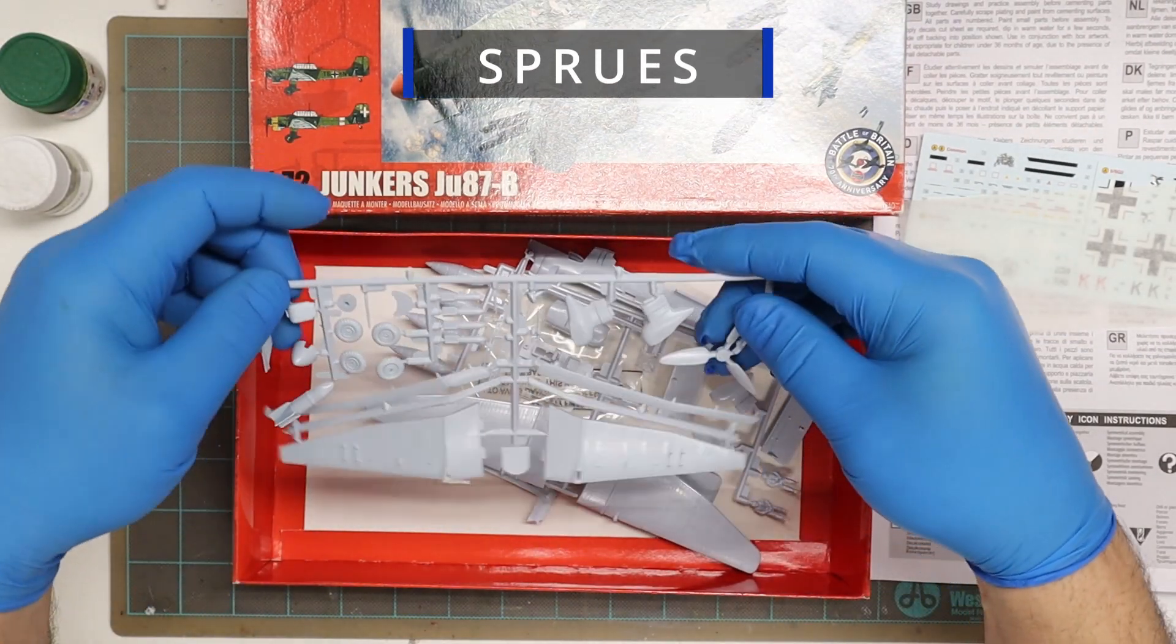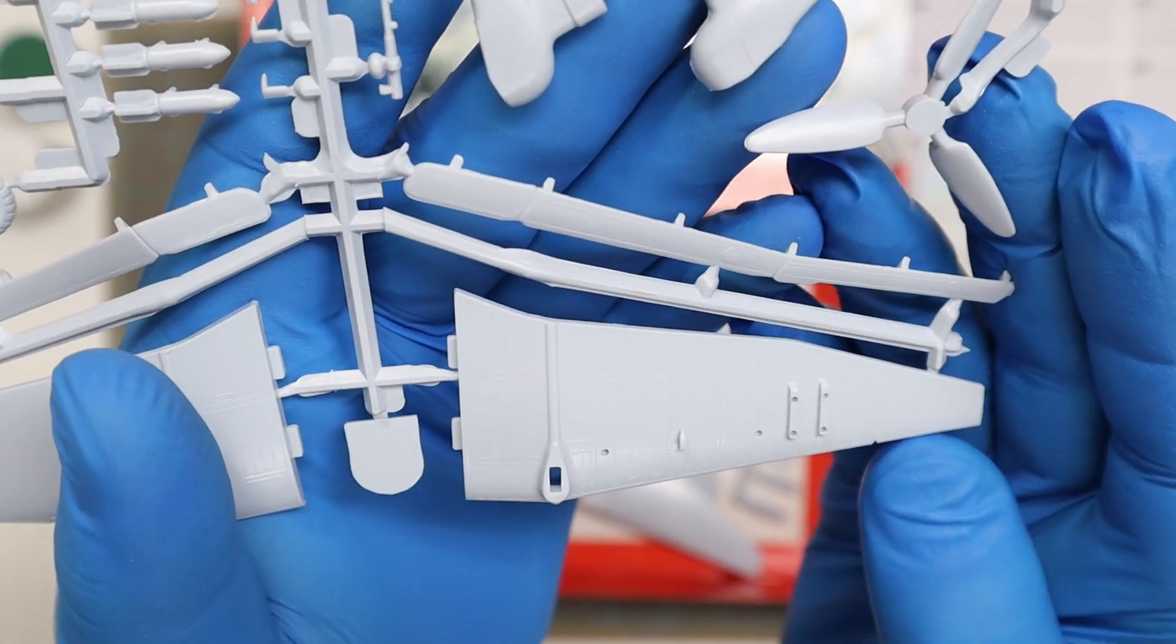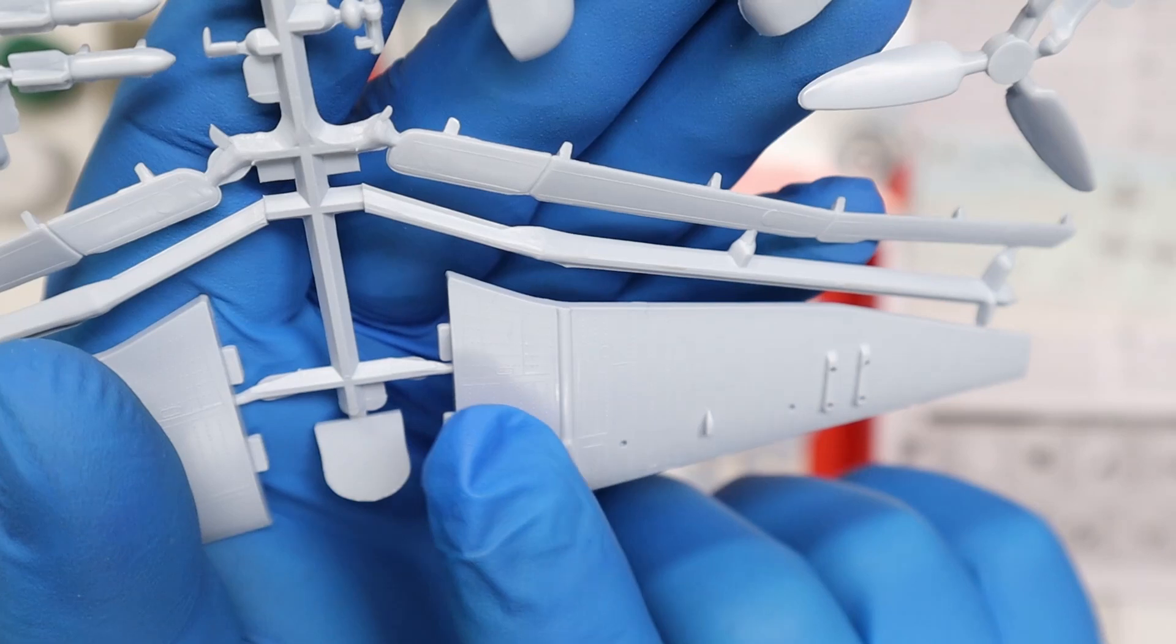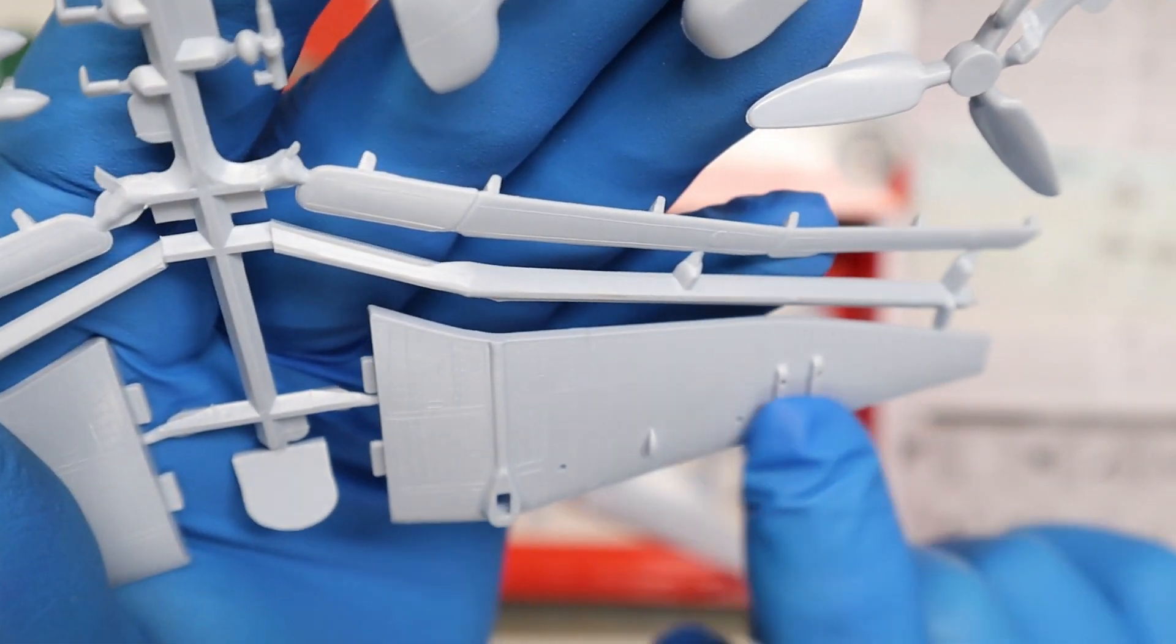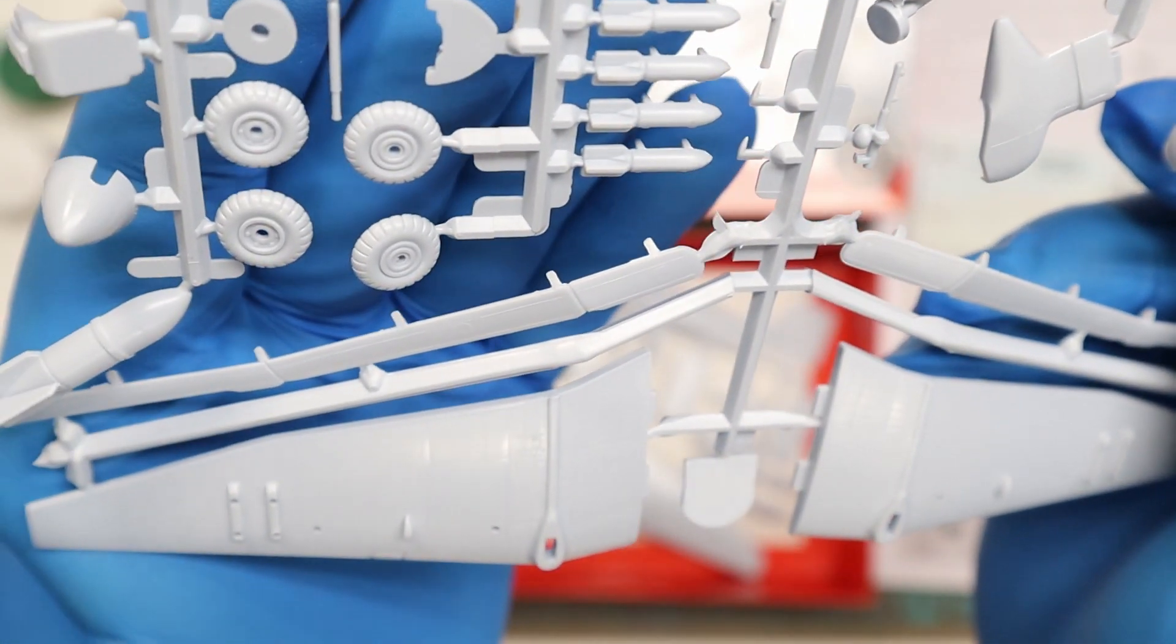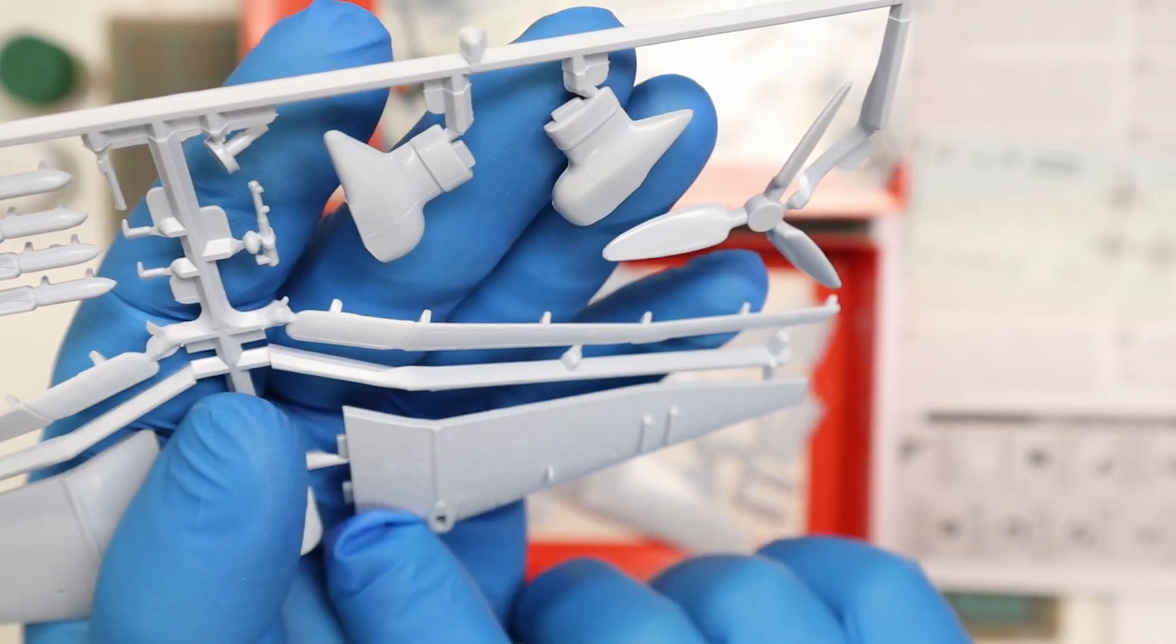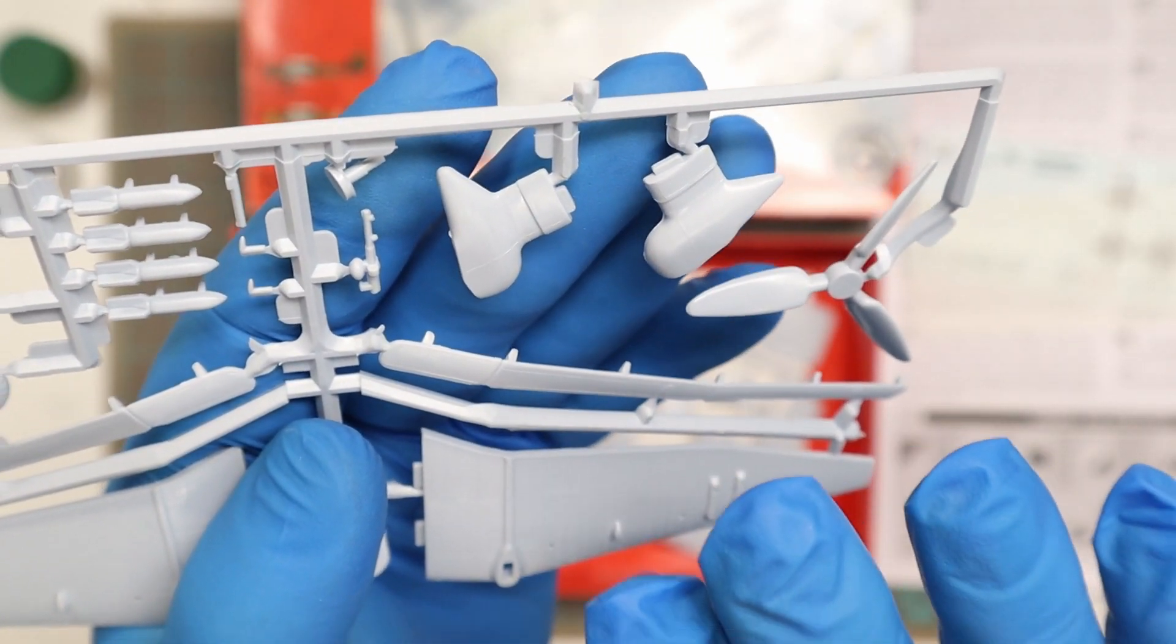Moving on to the sprues here, I'm just going to go sprue by sprue and see the nice quality. Over here on the lower wing, there's lots of detail, lots of panel lines, lots of rivets, some good detail on that. That's on both bottom wings. All these rivets and panel lines are raised.